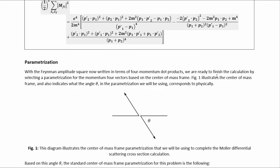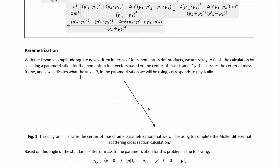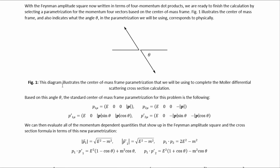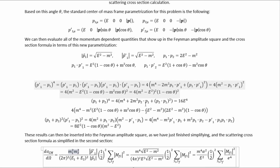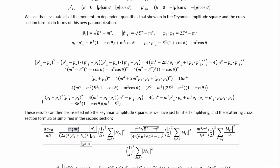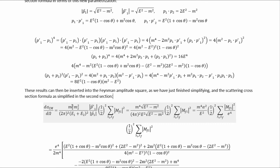With the Feynman amplitude squared now written in terms of four-momentum dot products, we are ready to finish the calculation by selecting a parameterization for the four-momentum vectors based on the center of mass frame. Figure 1 illustrates the center of mass frame and indicates what the angle θ in the parameterization corresponds to physically. Based on the concept of the center of mass frame and this definition of θ, we arrive at the standard center of mass frame parameterization for the momentum vectors. We can then evaluate all the momentum-dependent quantities — dot products, magnitudes, and the quadratic momentum quantities appearing in the denominators — in terms of this new parameterization.